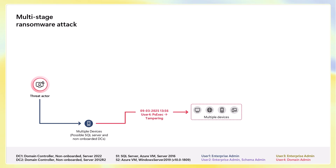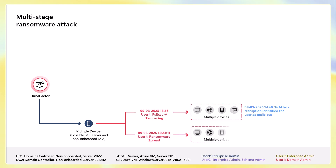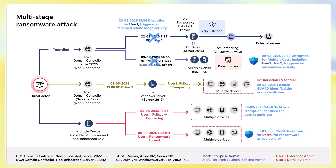We then saw yet another pivot from this attacker, where they connected to another machine and started running attacks against other servers and multiple devices. This time they were using PSExec to try and run those remote commands. We identified the attacker as malicious and went ahead and disrupted that user account as well when they tried to spread ransomware across the enterprise. All in all, you can see how we were able to identify attackers in many different modalities — using remote desktop tools or PSExec — and step in and disrupt that attacker before they could actually succeed in their mission.